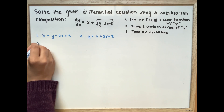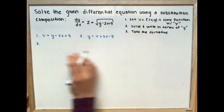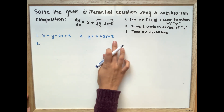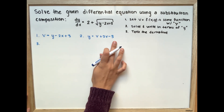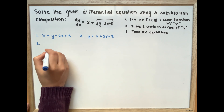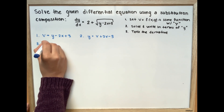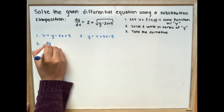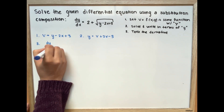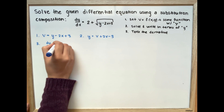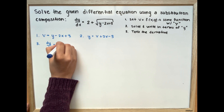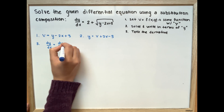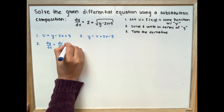And for our third step, we're going to take the derivative of this function. So we're going to have dy over dx is equal to dv over dx plus 2.